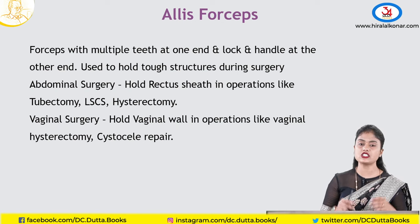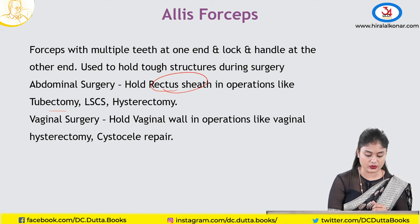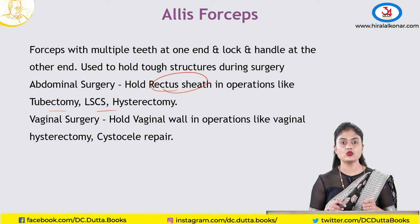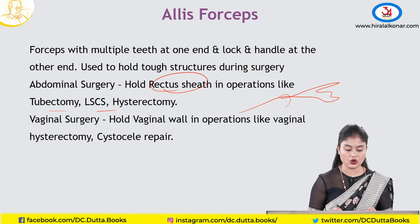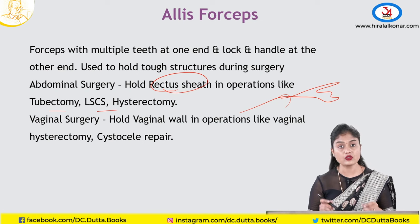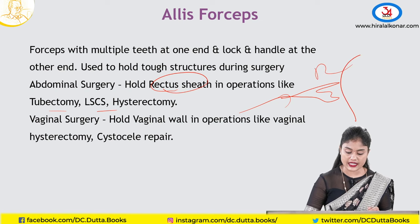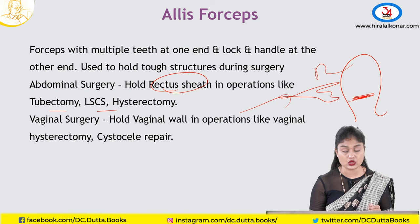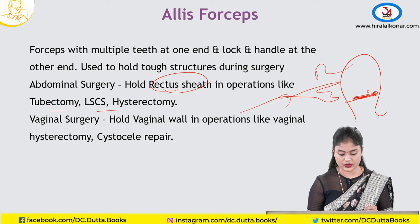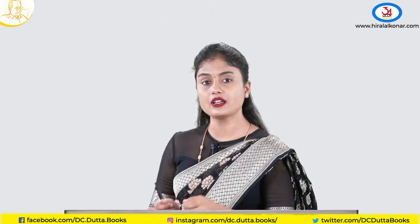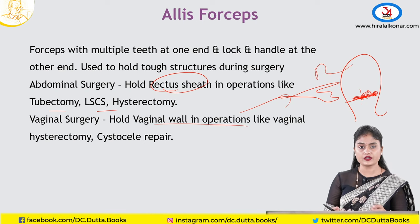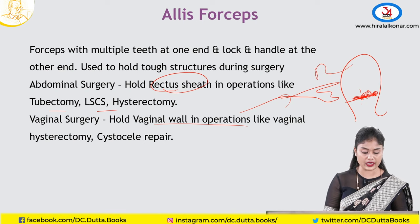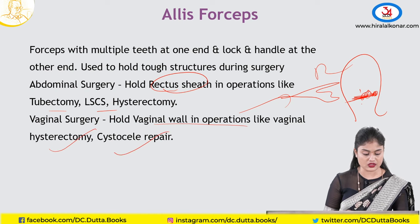Alice forceps is used in all surgeries to hold tough structures like the rectus sheath, in tubectomy, caesarean, hysterectomy. We do not use it to hold the fallopian tube because it is soft, spongy, and hollow — the teeth would cut through. In caesarean section, after extracting the baby, we hold the angle of the uterus with Alice forceps to start suturing. In vaginal operations, it is used to hold the angle of the cervix for hysterectomies and cystocele repairs.